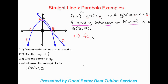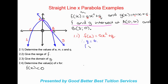We write f(x) = ax² + Q. Looking at our parabola graph, point A at (0, 6) is also the turning point of the parabola. We know the turning point value is Q, so we can say Q = 6. The equation now becomes f(x) = ax² + 6.